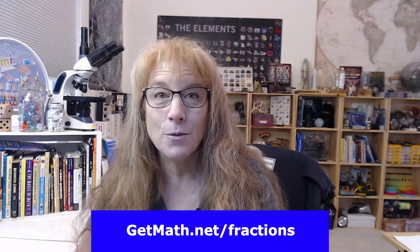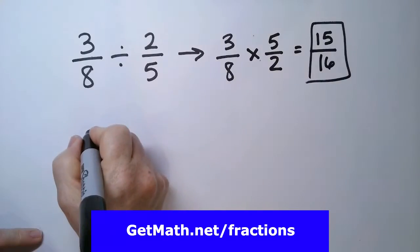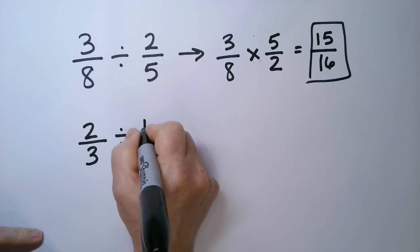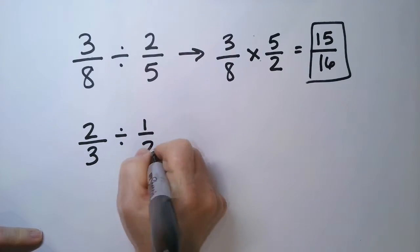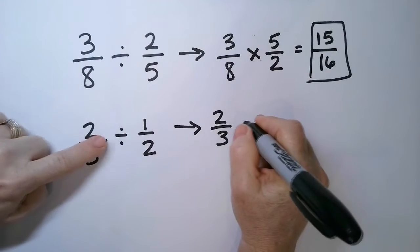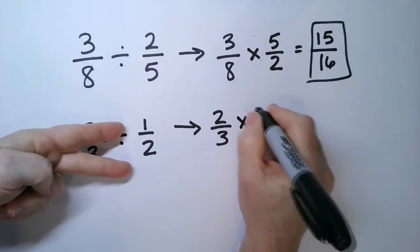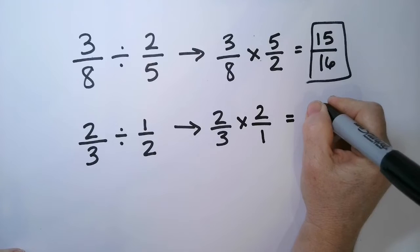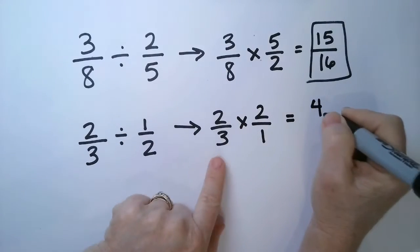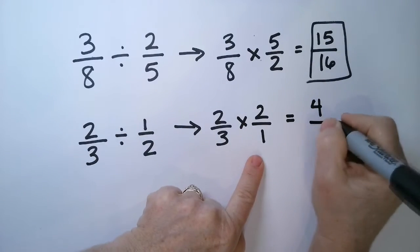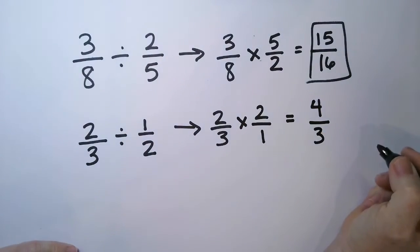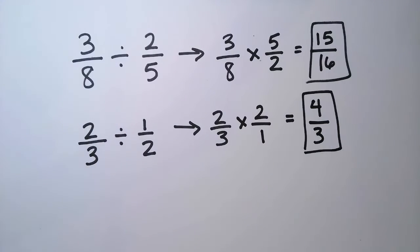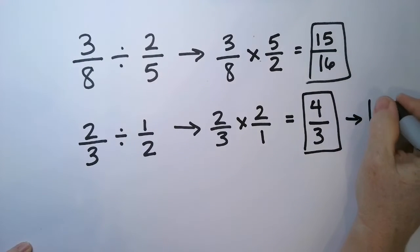Let's take a look at a few more problems. If I have 2 thirds divided by 1 half, what do I get? We're going to multiply, and now we're going to take 2 over 1. So I'm going to have 2 times 2 is 4, and 3 times 1 is 3. That gives us 4 thirds, which you can also write as 1 and 1 third.